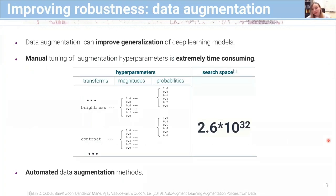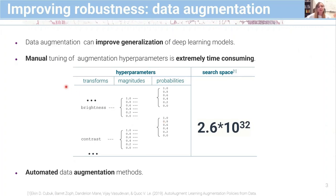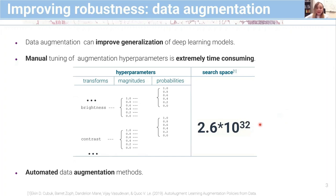We want models that can generalize across domains, and one of the ways of tackling this is through data augmentation. However, manual tuning of data augmentation hyperparameters is extremely time consuming, mostly because of the large search space. If you imagine you have a set of transforms, and for each transform a set of magnitudes, and for each magnitude a set of probabilities, your search space reaches around 10 to the power of 32, and manual tuning becomes infeasible.